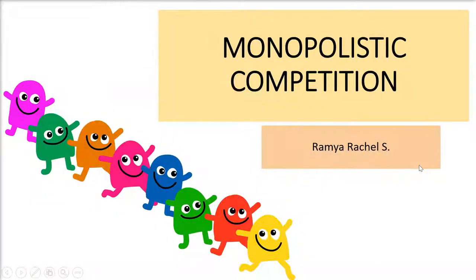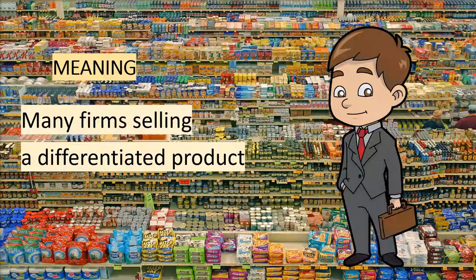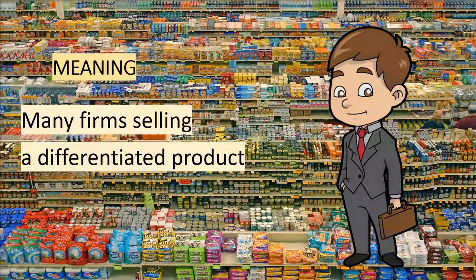So far we have seen perfect competition and monopoly, but these are two extreme cases which are rarely found in reality. In fact, there are market situations which fall in between these two extremes. One of them is monopolistic competition — a market situation where there are many firms selling a differentiated product, with competition among a large number of sellers who produce close but not perfect substitutes.